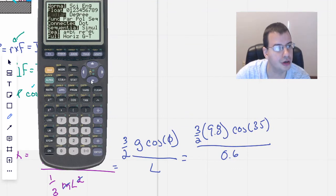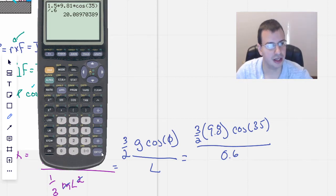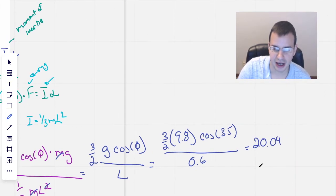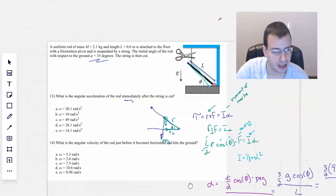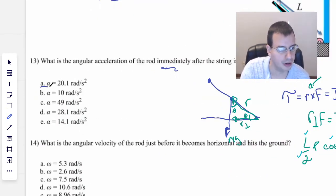We'll use our calculator. Mode, go to degrees. I'm going to do 1.5 instead of three halves times 9.8. I'm going to throw in a 1 just because I can. Times cosine of 35 divided by 0.6. And we get 20.09. Equals 20.09. And this is alpha, which is angular acceleration. So this will be radians per second squared. See what the possible answers are. So I'm going to call this one 20.1.